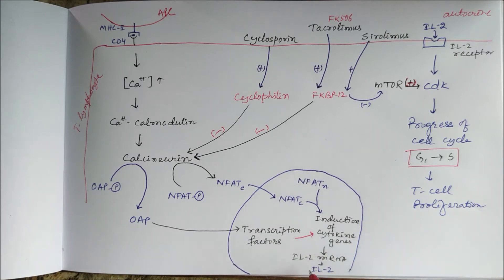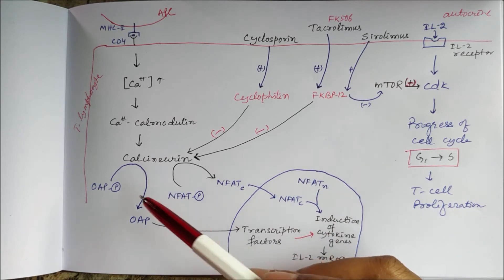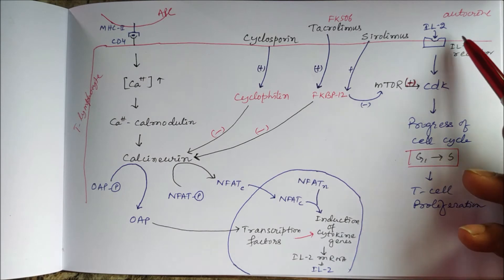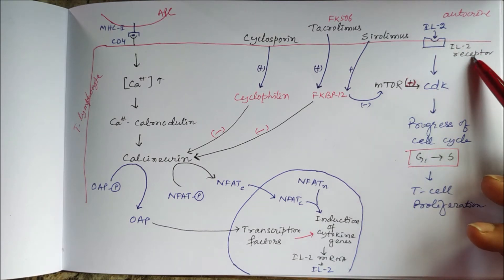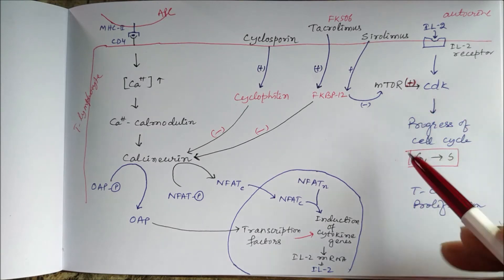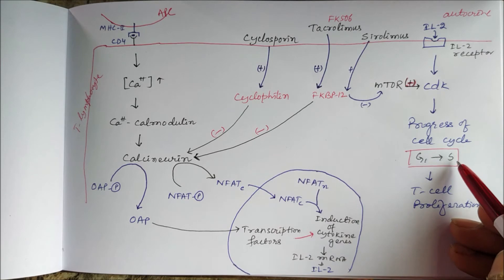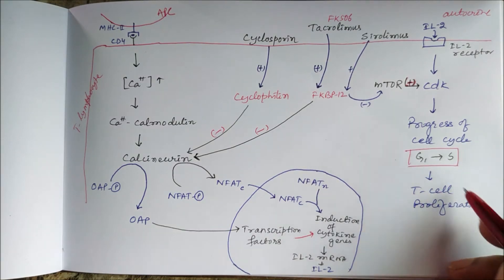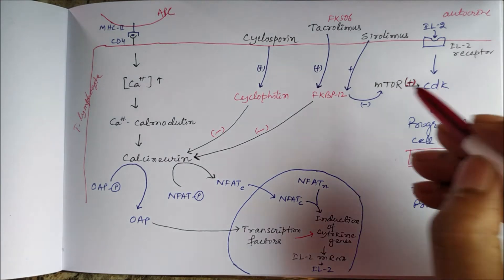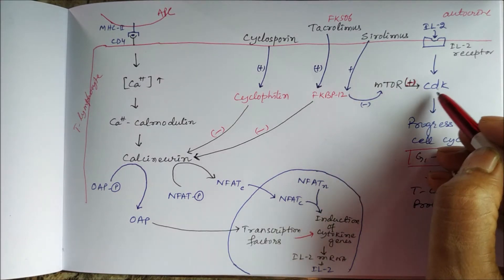Gene transcription leads to formation of interleukin-2 mRNA, which produces interleukin-2. Once released from T lymphocytes, interleukin-2 acts on the same T lymphocytes via the interleukin-2 receptor. This activates cyclin-dependent kinases (CDKs), which progress the cell cycle from G1 to S phase, resulting in T cell proliferation. The mammalian target of rapamycin (mTOR) also activates CDKs.